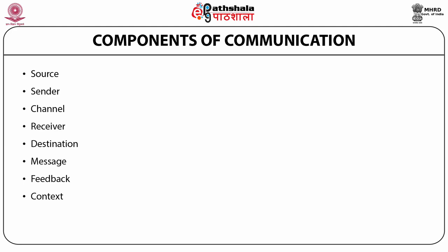Source is that which produces a message. Sender refers to the transmitter which operates on the message in some way to produce a signal suitable for transmission over the channel. Channel is the medium used to transmit the signal. Receiver performs the inverse operation of that done by the transmitter, reconstructing the message from the signals. Destination is the person or thing to whom the message is intended.